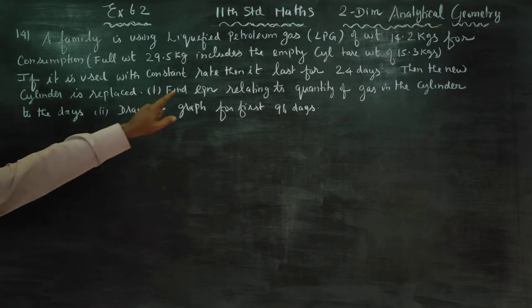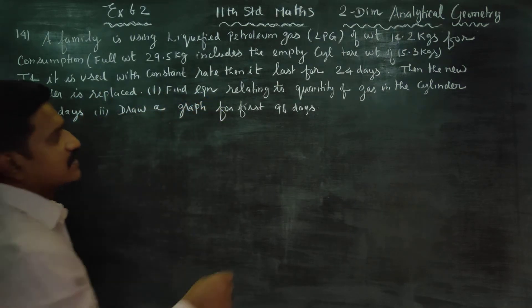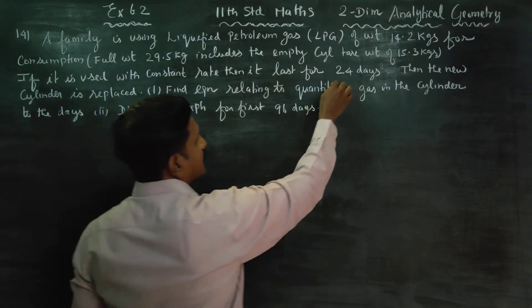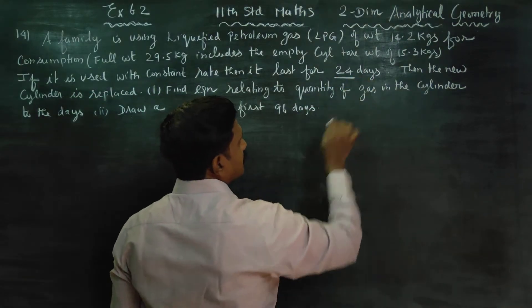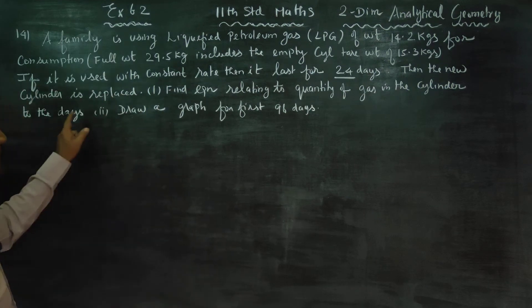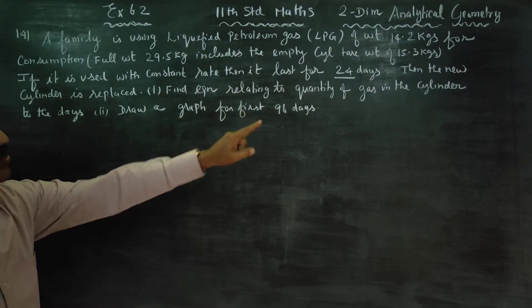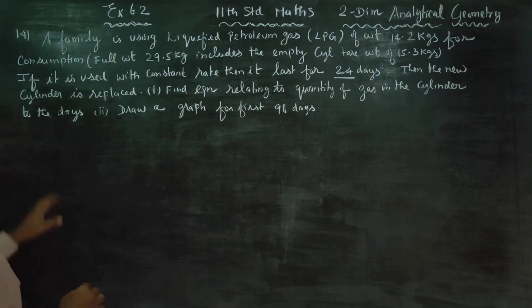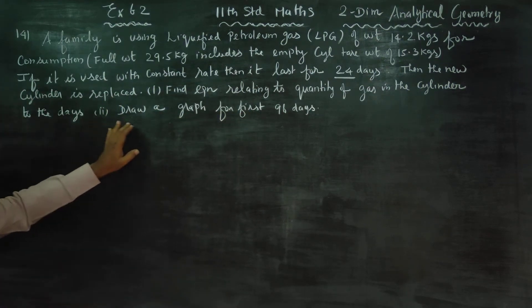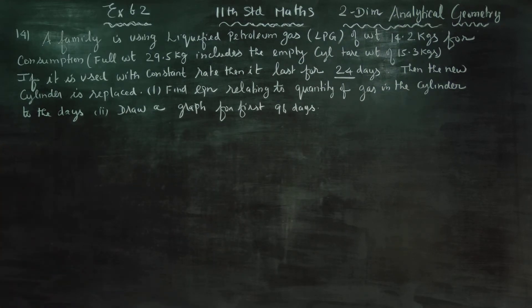If the gas is used at a constant rate, then it lasts for 24 days. After 24 days, a new cylinder is replaced. Find the equation relating to the quantity of gas in the cylinder, and draw a graph for the first 96 days.